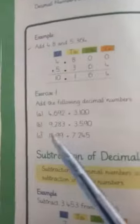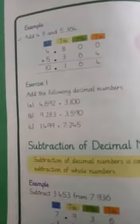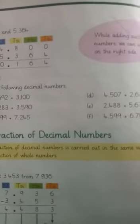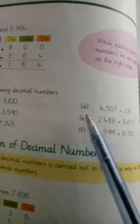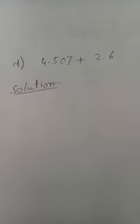Decimal numbers — you can add them. For the first part, I will demonstrate it. We will solve question number D in the notebook. Question number D has 4.507 plus 2.6.